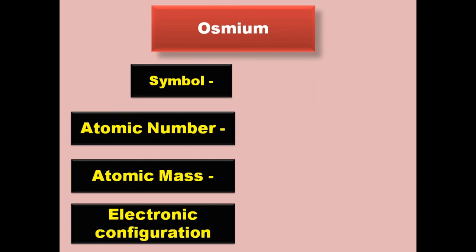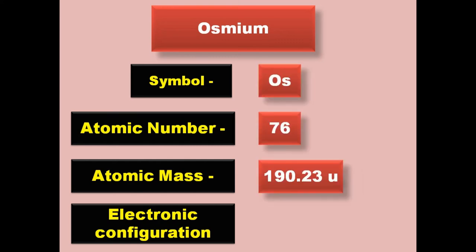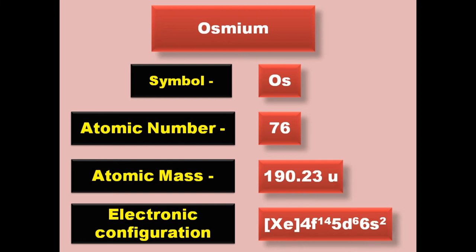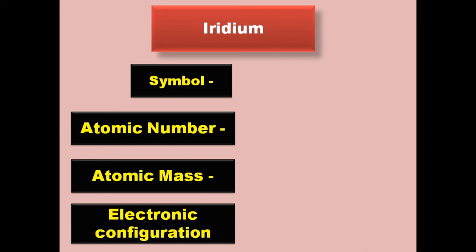Osmium has symbol Os, atomic number 76, atomic mass 190.23, electronic configuration [Xe] 4f14 5d6 6s2. Osmium is a transition metal and exists in solid form at room temperature.